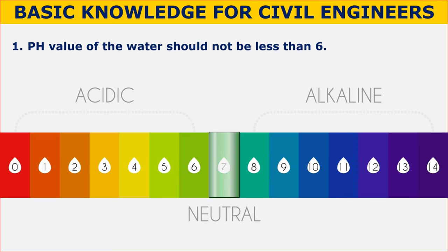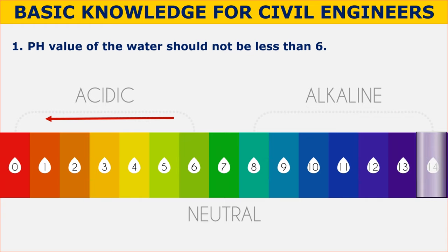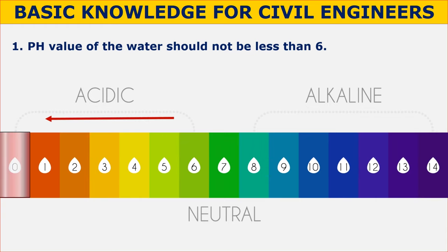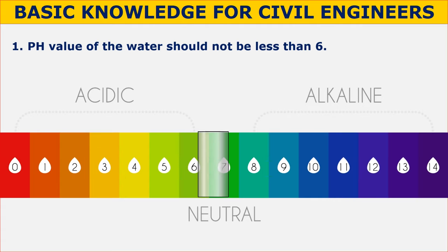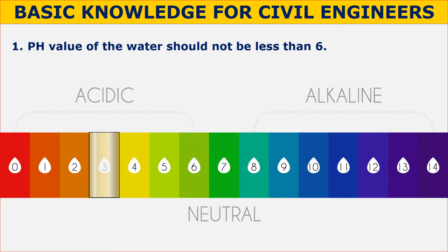The pH value of water used in construction should not be less than 6. A neutral pH is 7, found in natural fresh water; above 7 is alkaline and below 7 is acidic. Portland cement concrete has a pH of around 11, making it alkaline. Portland cement does not resist acidic compounds well — as pH decreases below 6.5, concrete deterioration increases. Solutions with a pH of 3 or lower are most harmful, making concrete more porous as it deteriorates.